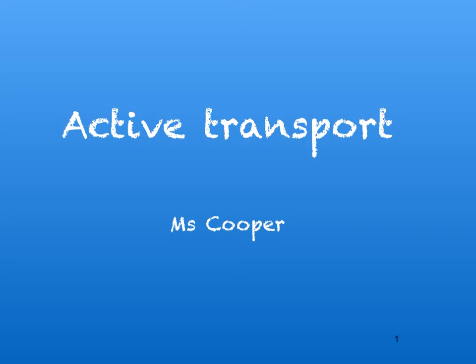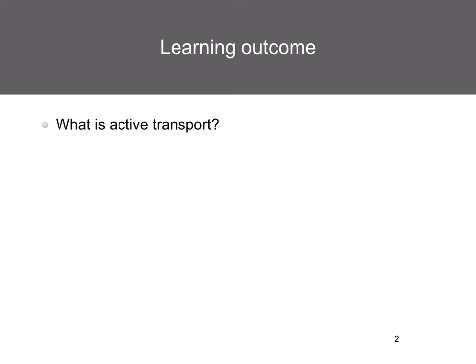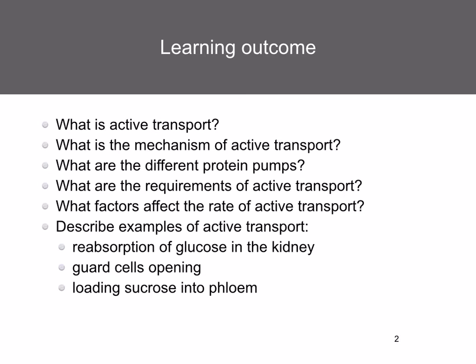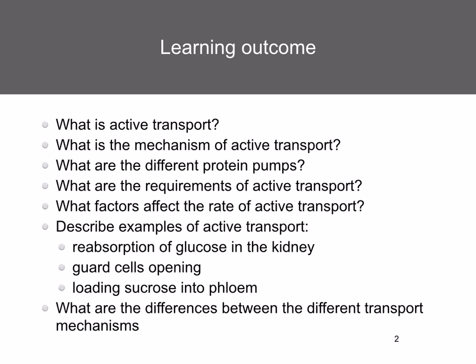In this topic, we're going to have a look at active transport. By the end of this topic, you should be able to answer: what is active transport? What is the mechanism of active transport? What are the different protein pumps? What are the requirements of active transport? What factors affect the rate of active transport? And we're going to look at examples: reabsorption of glucose in the kidney, guard cells opening, loading sucrose into phloem, and the differences between the different transport mechanisms.